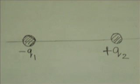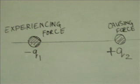Over here, we are going to draw the force vector at the charge, negative Q1, because that is the charge which is experiencing the force. The force on this charge is due to the other charge, Q2, so we can call it the charge which is causing the force.